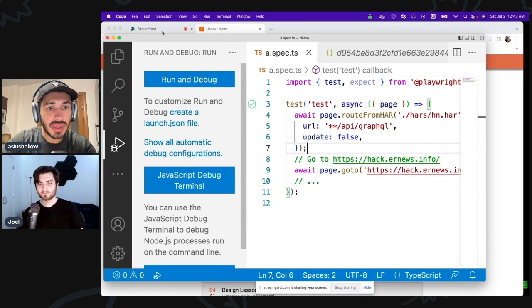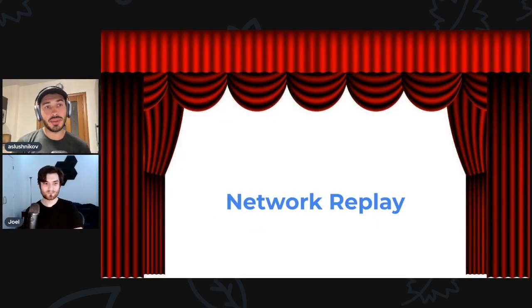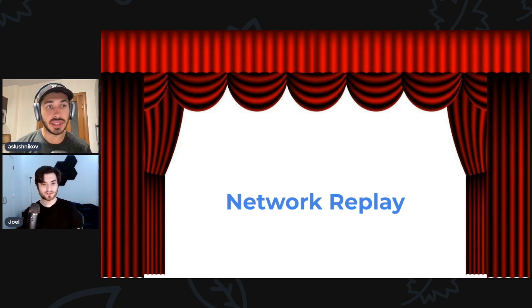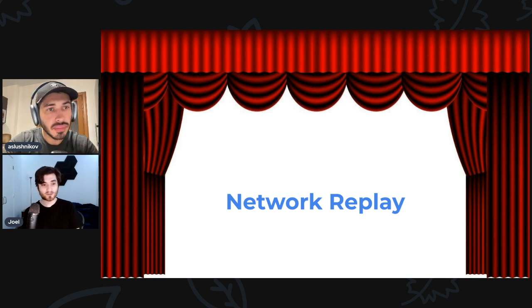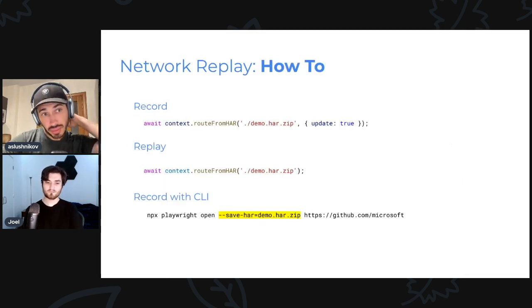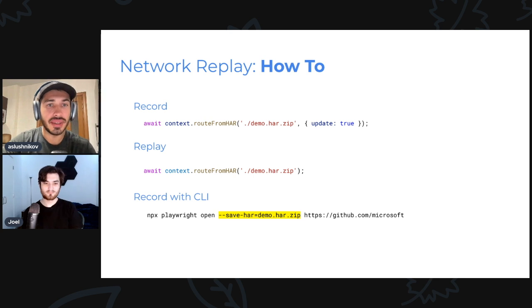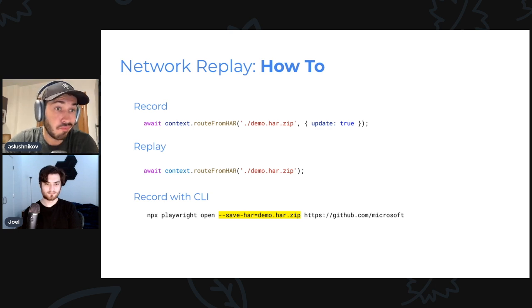That's very cool. When would our users want to use that? Anytime you use API mocking — like before you might have been using page.route. Now you can just use route from HAR instead. Rather than doing mocks manually, you can actually just populate the whole thing. Would you recommend committing that HAR file into my repository? Yeah, you definitely should. So to recap: we can record using the new update: true flag, and we replay without the update flag. We can also use the CLI to record a HAR of everything we do in the browser.